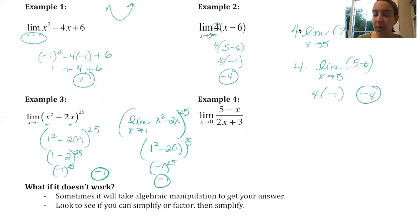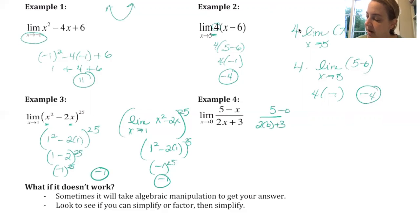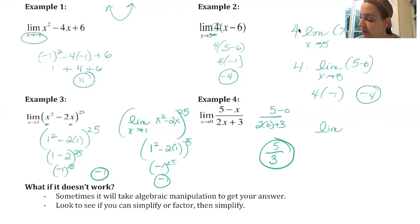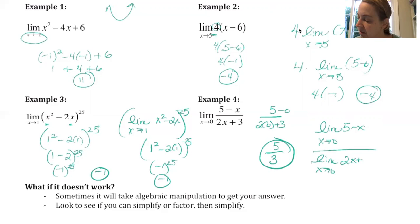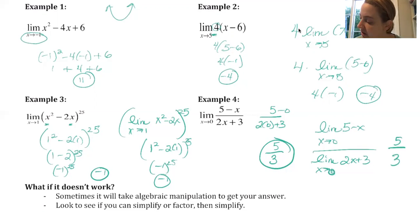Example 4: the limit as x approaches 0 of (5 minus x) over (2x plus 3). Again, you want to substitute that 0 and see what you get. So in the numerator I have 5 minus 0, and in the denominator I have 2 times 0 plus 3. So the top is 5, the denominator is 3, the answer is 5 thirds. What's really happening is this is the limit of (5 minus x) over the limit of (2x plus 3) — you can find the limit of the numerator and denominator separately. Top gives 5, bottom gives 3, so there's our 5 thirds.